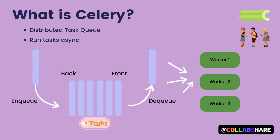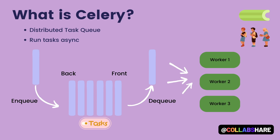In computer science, a task queue is a data structure used for managing and executing tasks or jobs asynchronously. A task queue acts as a buffer that stores a set of tasks or jobs that need to be processed by one or more worker threads or processes. When a new task is added to the queue, it is appended to the back of the queue. The worker threads or processes dequeue tasks from the front of the queue and process them one by one.